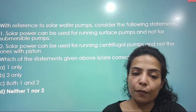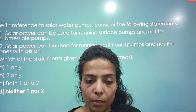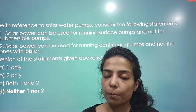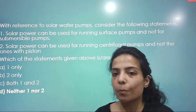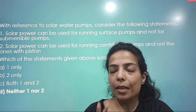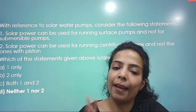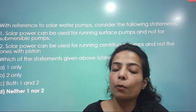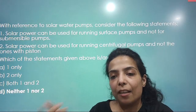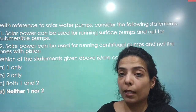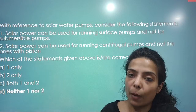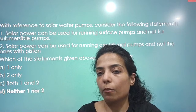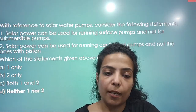With reference to solar water pumps: solar power can be used for running surface pumps and not submersible pumps — this is false, as submersible pumps can also be run using solar power. Solar power can be used for running centrifugal pumps and not piston pumps — this is also false, as both centrifugal and piston type solar-powered pumps are available. So none of the statements were true, and neither statement 1 nor 2 was the right answer.